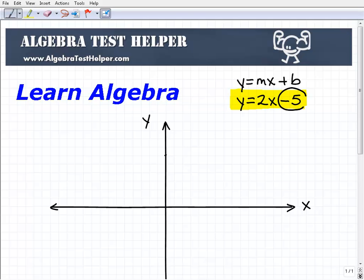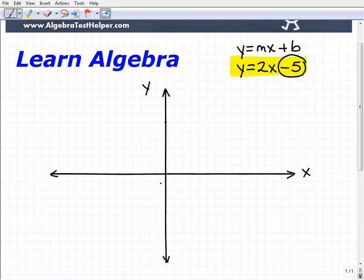What we need to do is start at this point here on the y-axis. Let's go to negative 5 on the y-axis. That's going to be right here: 1, 2, 3, 4, 5. So that's my starting point.